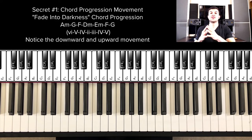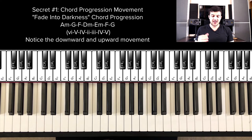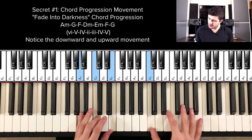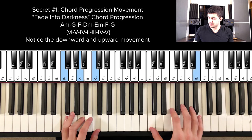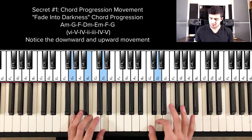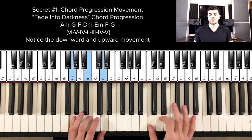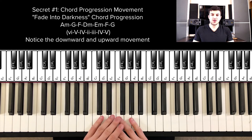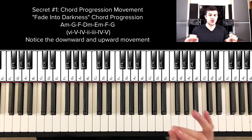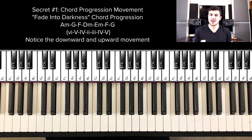The first secret is how Avicii uses movement in his chord progressions — how he goes down and then back up to build emotion, tension, and that 'fade into darkness' feeling. I've transposed it to use only white keys for these tutorials to make sure you really comprehend it and can play along. What Avicii is doing in 'Fade Into Darkness' is introducing a lot of emotion with this downward then upward movement, and when you do that with a chord progression you're building suspense.